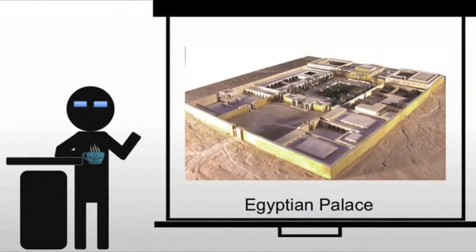Let's start with our Egyptian palace. We're actually looking at a New Kingdom Amarna period palace. This is very specific, but it's going to be representative of a lot of palaces that you would see in ancient Egypt.